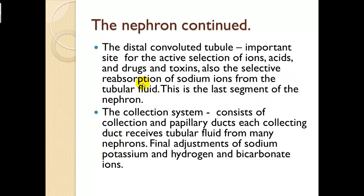The distal convoluted tubule is an important site for the active secretion of ions, acids, drugs, and toxins, as well as the selective reabsorption of sodium from the tubular fluid. This is the last segment of the nephron. The collection system consists of collecting ducts and papillary ducts; each collecting duct receives tubular fluid from many nephrons. Final adjustments of sodium, potassium, hydrogen, and bicarbonate ions occur here. Once filtrate makes it past this point, it is urine.